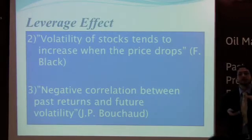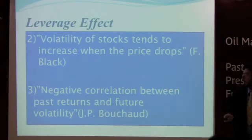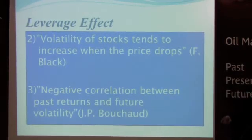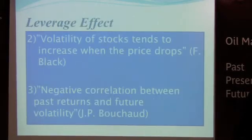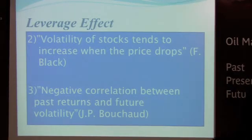We're talking about the magnitude — market moves in percentage points. The last definition: negative correlation between past returns and future volatility. There's a question from the audience: is that across all assets, or particularly focused on stocks? We will talk about that later on — yes, it applies broadly.